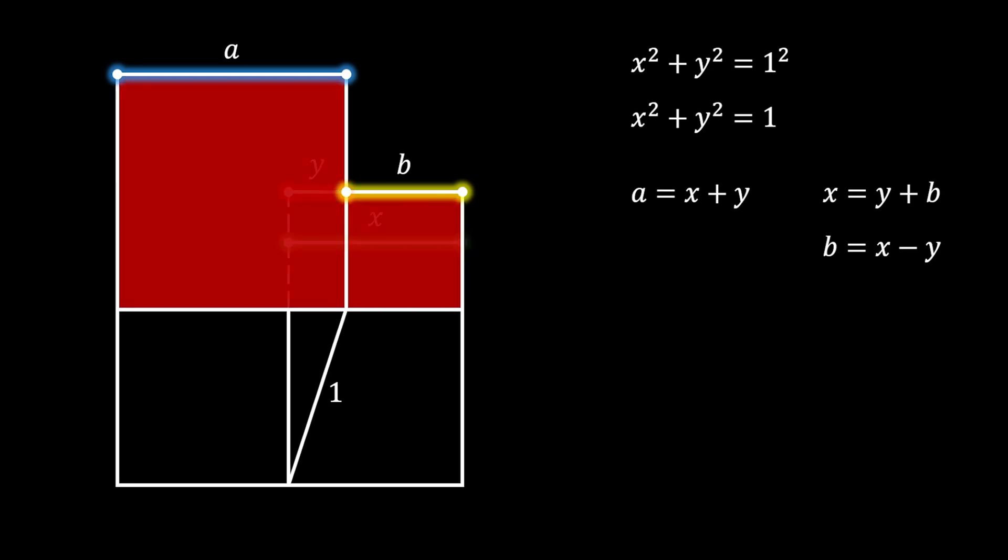Alright, so now, our red shaded area contains two squares. Bigger square with the side a that has the area of a squared and the smaller square with the side b, which has the area of b squared. We will use this in formula. We can say that our wanted area must be equal to a squared plus b squared.